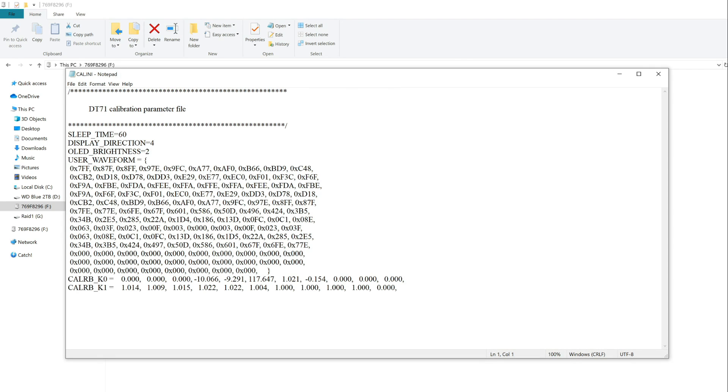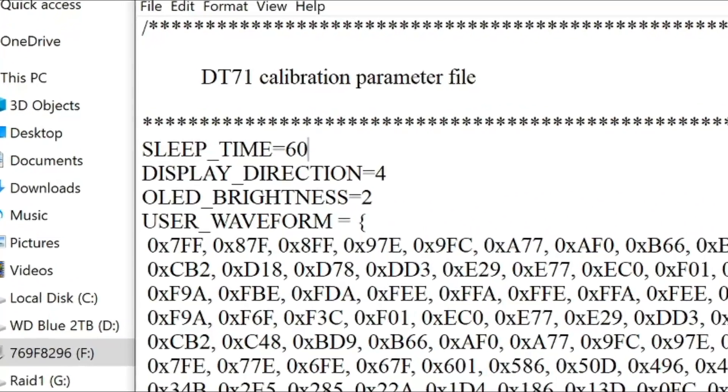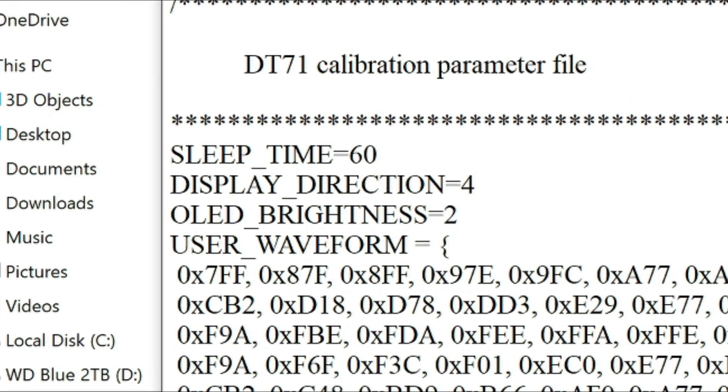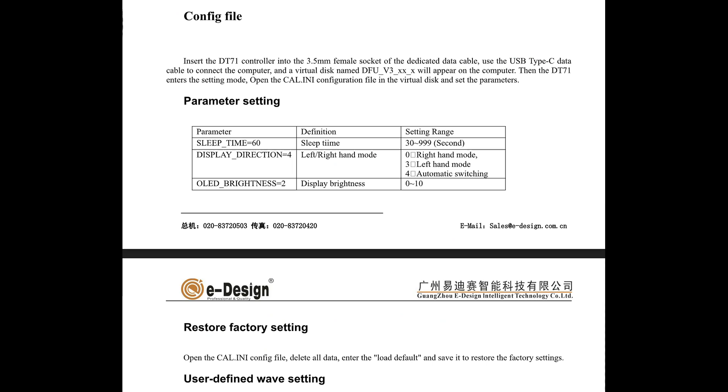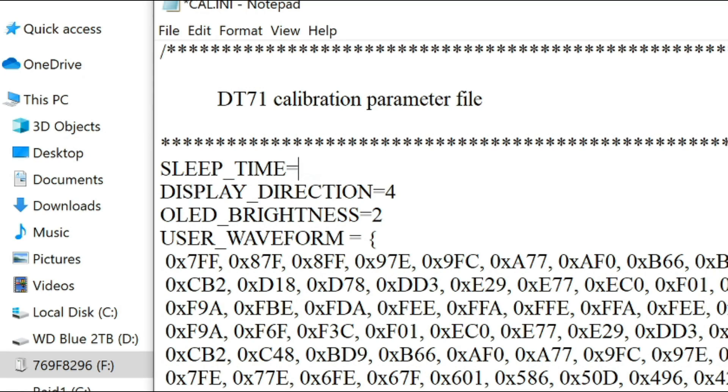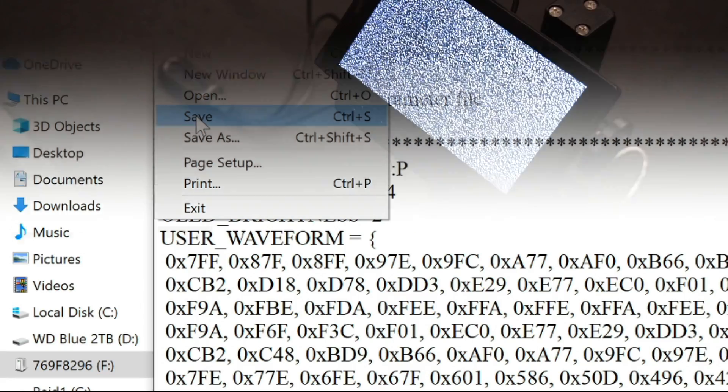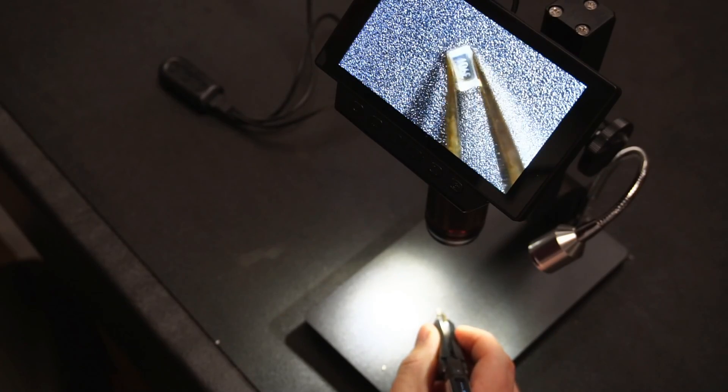Open it with a text editor such as Notepad. Here is where you can customize various settings such as sleep time, display settings, and program a custom waveform for the signal generator function. You can find more info about how to customize these settings in the DT-71 user manual. After making any changes, don't forget to save your changes before exiting. Let's move on to testing the tweezers.